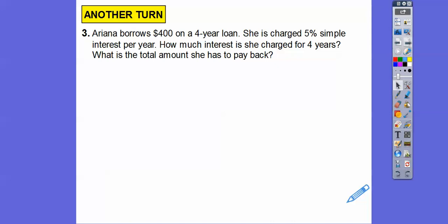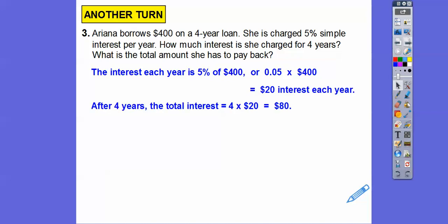Okay, so Ariana borrows $400 on a four-year loan. She is charged 5% simple interest per year, so 5% of 400. So how much interest is she charged for four years and what's the total amount she has to pay back? The interest that she pays each year is 5% of 400 or 0.05 times 400, which is $20 a year. So after four years, we multiply 4 times 20, and she's going to have to pay $80. So Ariana has to pay back the $400 plus the $80 of the simple interest, so $480 total.